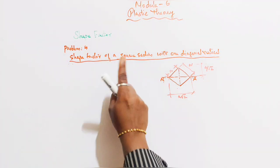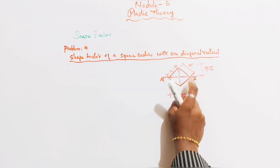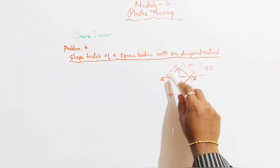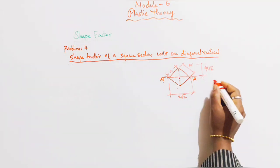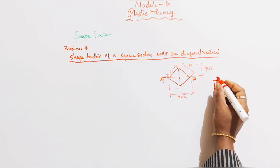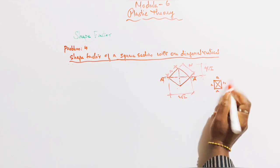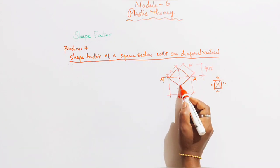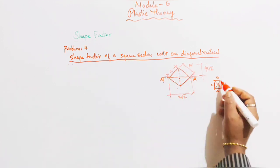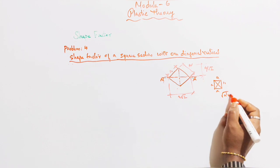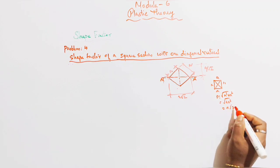Shape Factor of a Square Section with One Diagonal Vertical. This is the figure — a square of side a. This is one side a, and this is a, this is a, this is a. We have a square here with sides a, a, a, a. This is one diagonal, this is the other diagonal. One diagonal is vertical. The diagonal length is √(a² + a²) = √(2a²) = a√2.